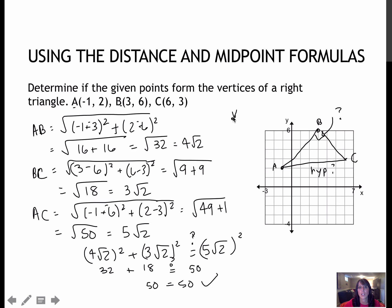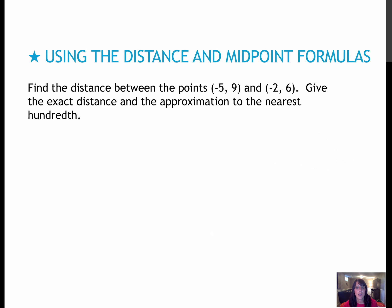And so therefore, yes, these are the vertices of a right triangle because it uses the Pythagorean theorem. Here's an easier question than the last one for you to try on your own. Press pause, find the distance between those two points, and then press play to check your work.